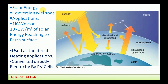First, what is meant by solar energy? Solar energy is the sun's radiation reaching the Earth's surface in the form of light or heat. Solar energy is in the form of electromagnetic waves that travel even in a vacuum. Some scientists claim that energy is received on the Earth's surface in the form of energy pockets called photons.